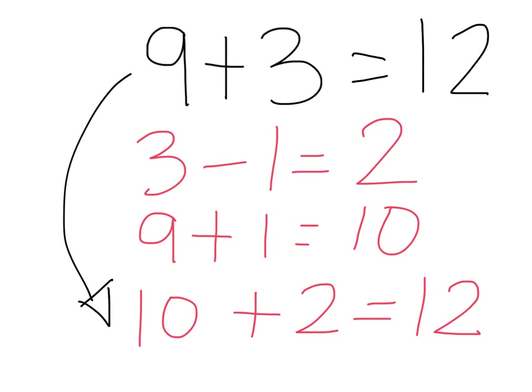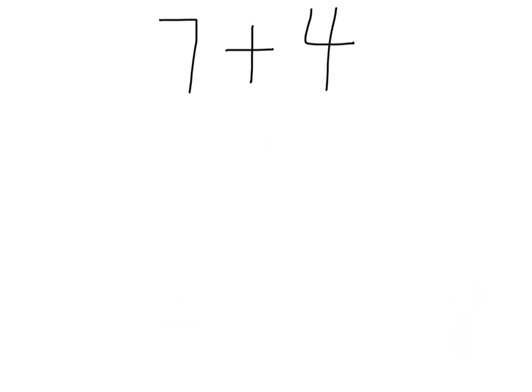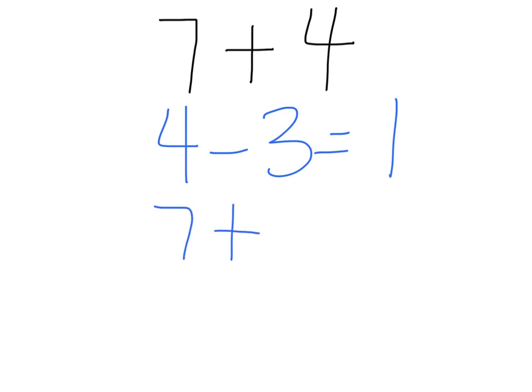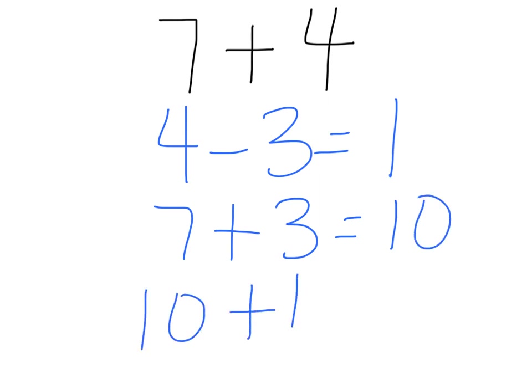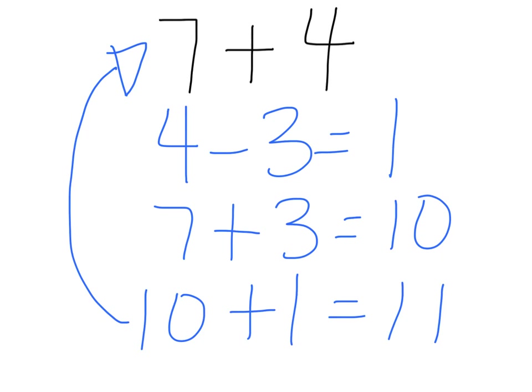And 10 plus 2 equals 12. Here is 7 plus 4. We said 7 is a number to use the strategy for because it's very close to 10. I need to know the partner number of 7 — what do I add to 7 to make 10? I know that 7 plus 3 makes 10. So I minus 3 from the 4, which leaves 1 on that side, and I give that 3 to the 7. Because 7 plus 3 equals 10, now I have 10 plus 1 equals 11. 10 plus 1 is the same as 7 plus 4 — we're just using that friendly 10 as an easier reference point.